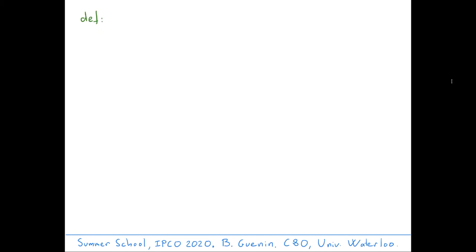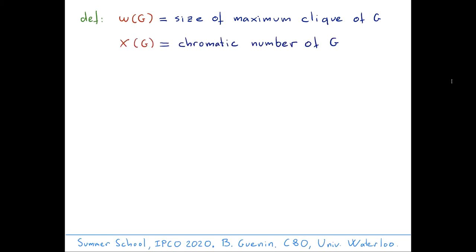Given any graph G, you can define two parameters. Omega(G) is the size of the maximum clique in G — the size of the largest clique. Chi is going to be the chromatic number of G, which is the minimum number of colors in a coloring of G. A coloring is a partition of the vertices into stable sets (colors), or equivalently an assignment of colors to vertices such that adjacent vertices get different colors.